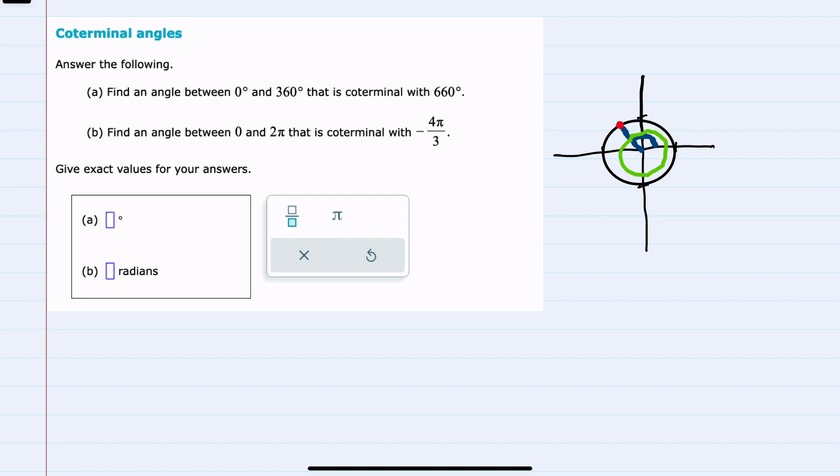Or if we subtracted full revolutions, we would end up back at the same original angle as measured from the x-axis.